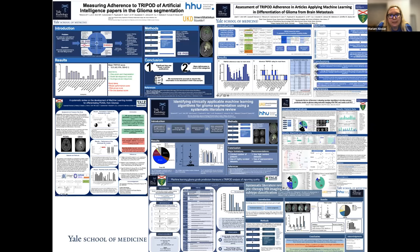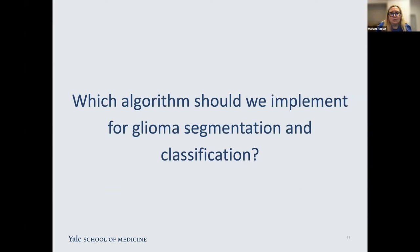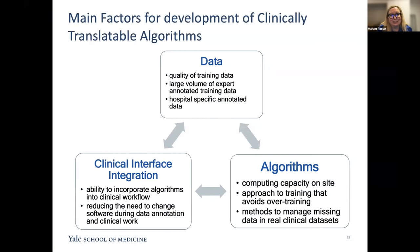We've presented multiple posters at a variety of conferences on this large collection of studies, and found that the TRIPOD adherence score was consistently very low among every application of machine learning studies in gliomas. So whereas we started with the question of which algorithm should we implement for glioma segmentation and classification, it turns out that was the wrong question. We actually needed to look at a three-part approach: what is the data being used, what are the algorithms being used, and what is the clinical interface integration — the ability to incorporate algorithms into clinical workflow.